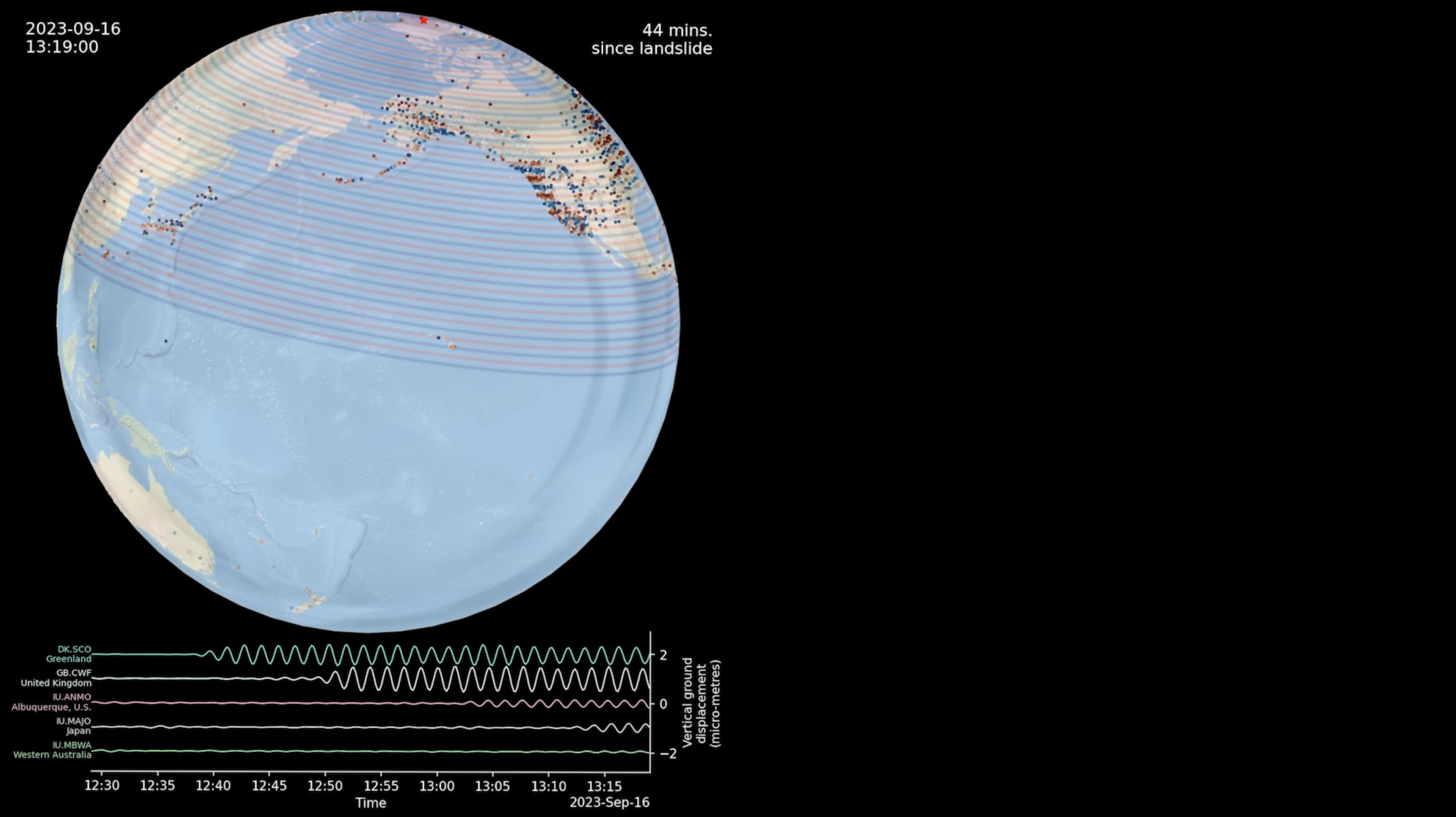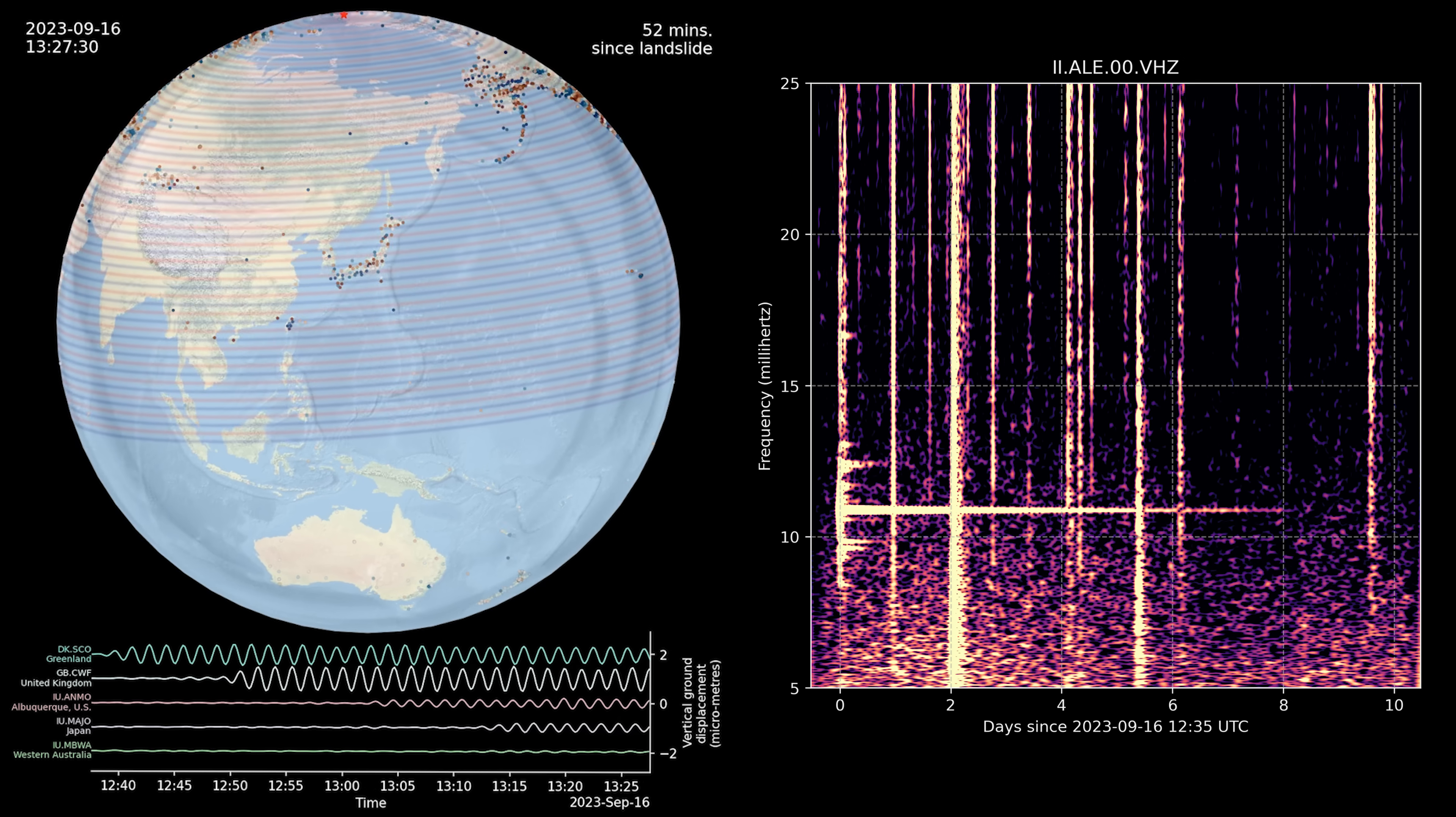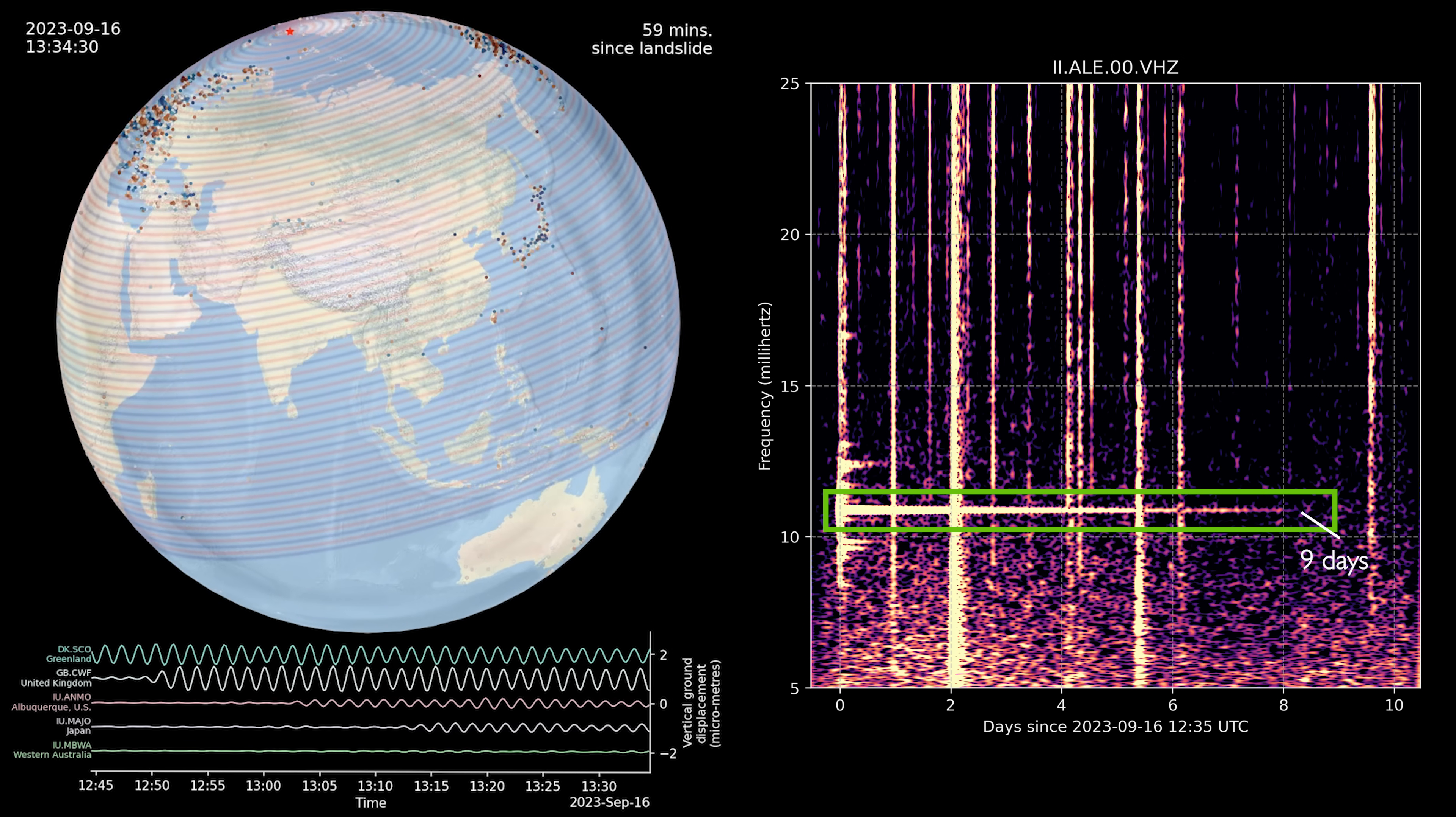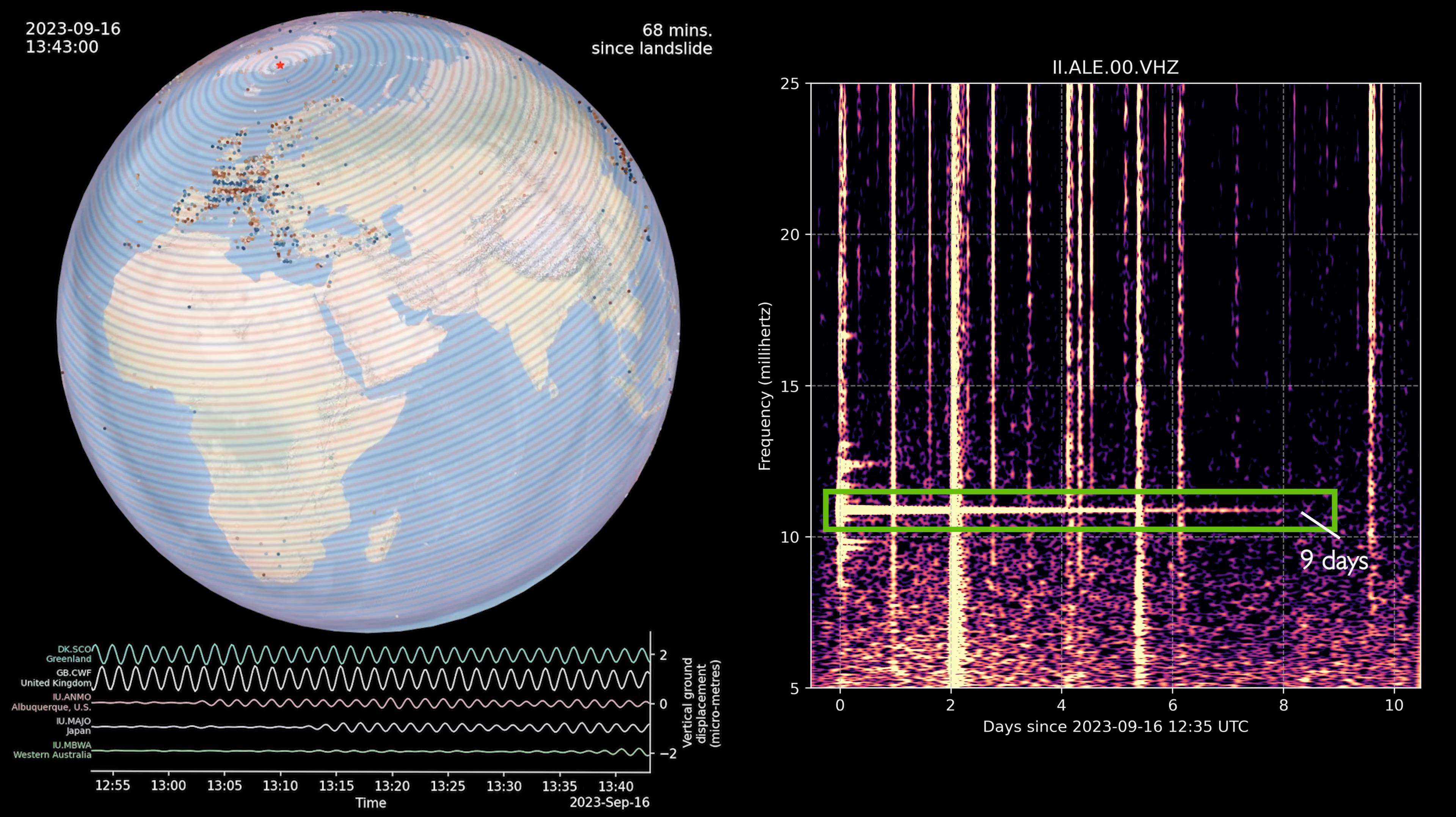The signal looked nothing like an earthquake. If we were to hear the vibrations from earthquakes, they would sound like a rich orchestra of rumbles and pings. Instead, the signal from Greenland was a completely monotonous hum. A simple sine wave oscillating up and down for 90 seconds. It lasted for nine days.